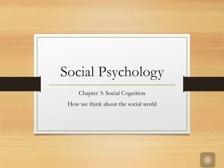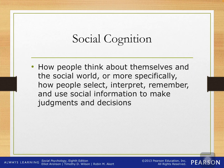Today we're going to talk about chapter three, which is social cognition and how we think about the world around us in our social world. Social cognition is how people think about themselves, how they think about their social world, how we select, interpret, and remember the information and social information around us to make judgments and decisions.